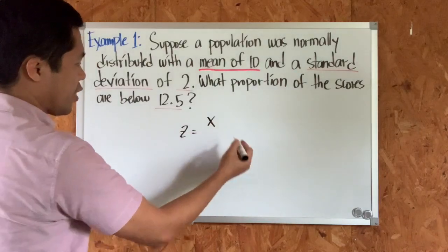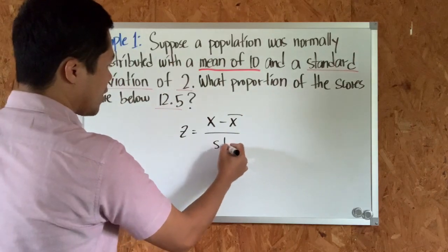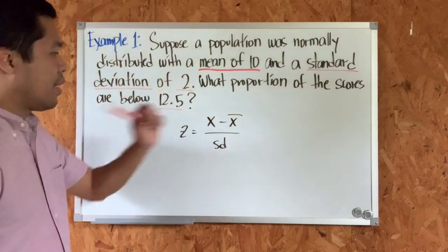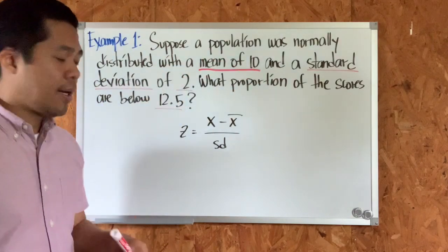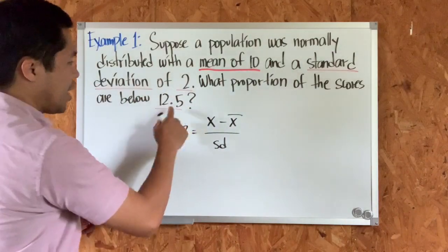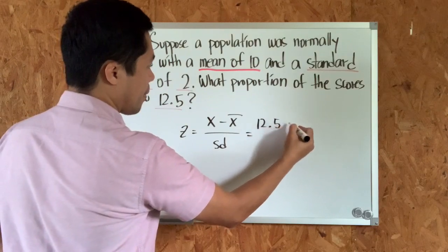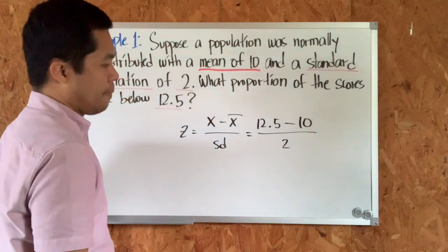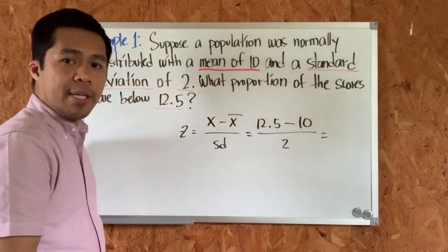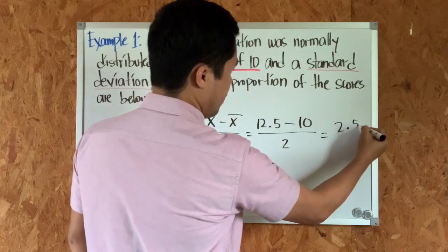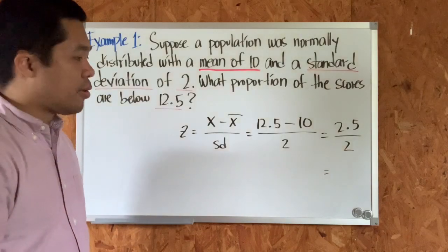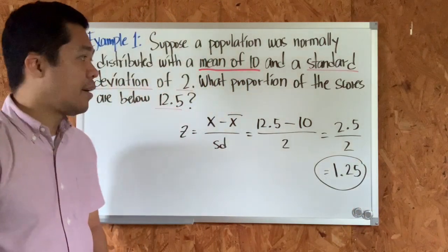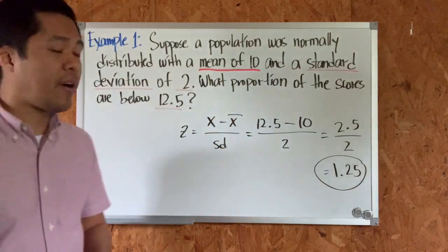The formula for the z-score is equal to the observation or score minus the mean, divided by the standard deviation. Here, x is the observation which is 12.5, the mean is 10, and the standard deviation is 2. So this is equal to 12.5 minus 10, which equals 2.5, divided by 2. So 2.5 divided by 2 is equal to 1.25. That's the answer — the proportion of scores below 12.5 corresponds to a z-score of 1.25.